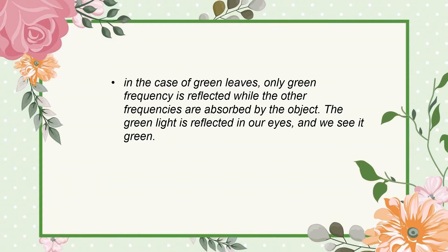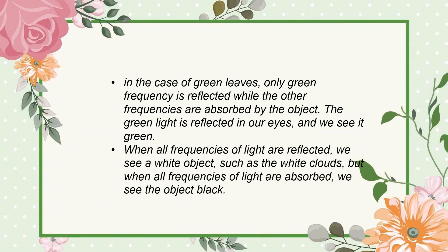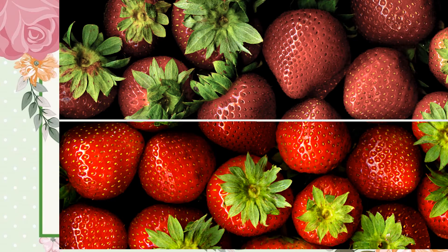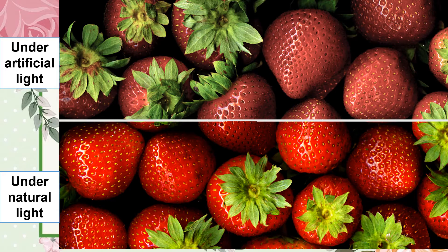The green light is reflected to our eyes and we see it as green. When all frequencies of light are reflected, we see a white object such as white clouds, but when all frequencies are absorbed, we see the object as black. Colored objects have pigments capable of reflecting specific colors of light. A strawberry reflects the red frequency and absorbs the others. Comparing reflection from natural sunlight and an artificial light source such as LED light, the color intensities are different — the strawberry would appear pale red in artificial light because it contains less red light compared to natural sunlight.